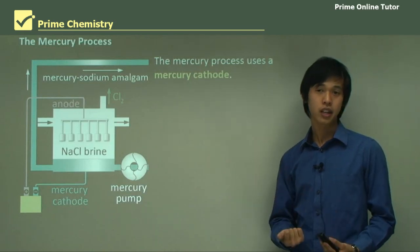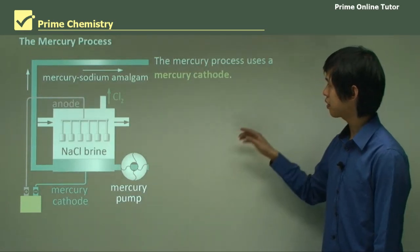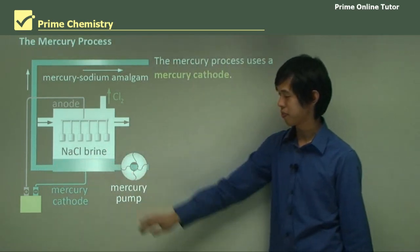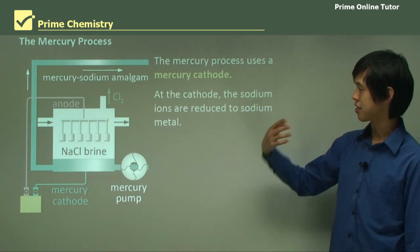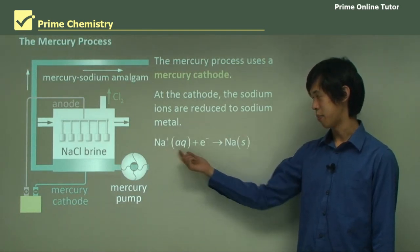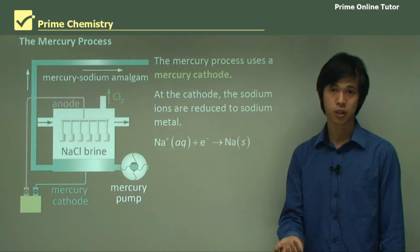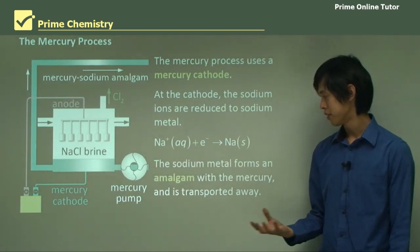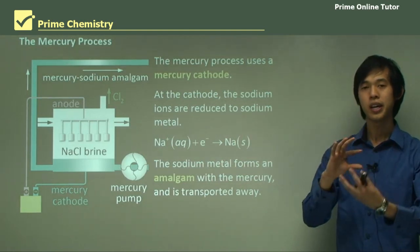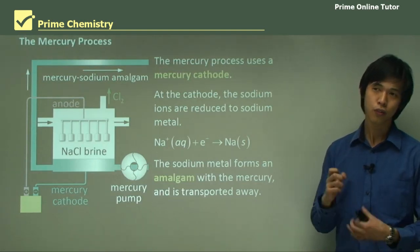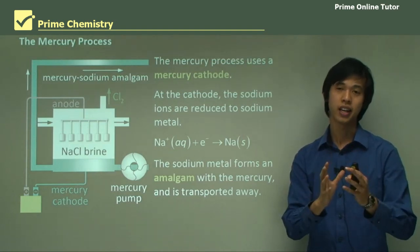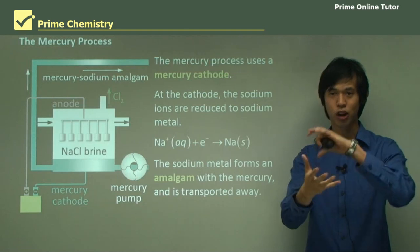The mercury process is the first one and historically the first process we used. It uses a mercury cathode — the silvery blue shown here is the mercury. At the cathode, the sodium ions are reduced to sodium metal: Na⁺ + e⁻ → Na(s). The sodium metal actually forms an amalgam — it sort of dissolves into the mercury metal and gets trapped within it.